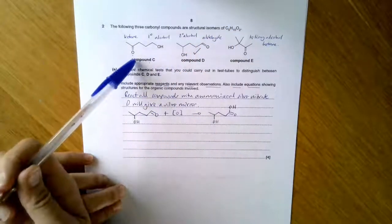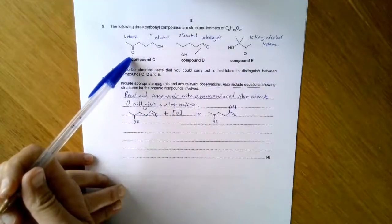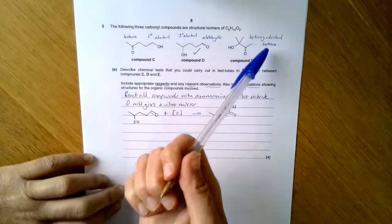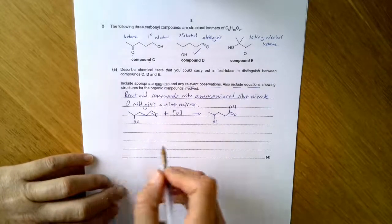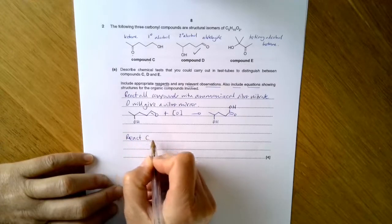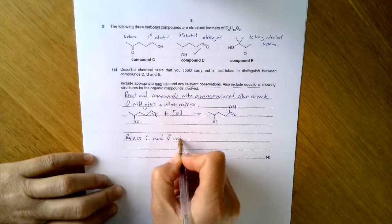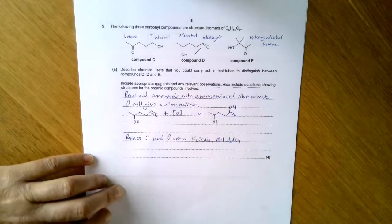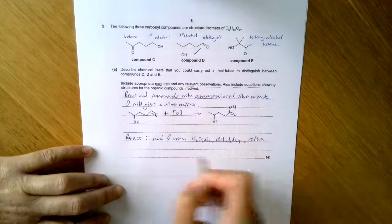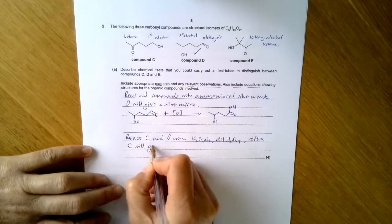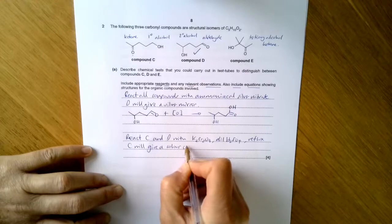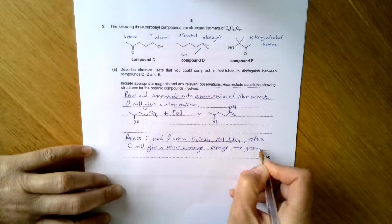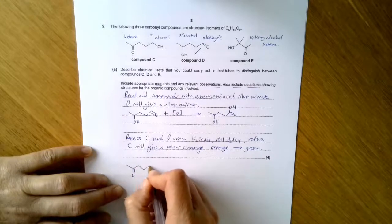I now want to distinguish C and E. Well, the ketone is not going to help me do that because they've both got a ketone. But the type of alcohol I've got is going to help me do that. Because primary alcohols can be oxidised and tertiary alcohols can't. So my next step is to react C and D with potassium dichromate and dilute sulfuric acid, and do that under reflux. And C will give a colour change. The colour change here is happening to the dichromate, and that will go from orange through to green.